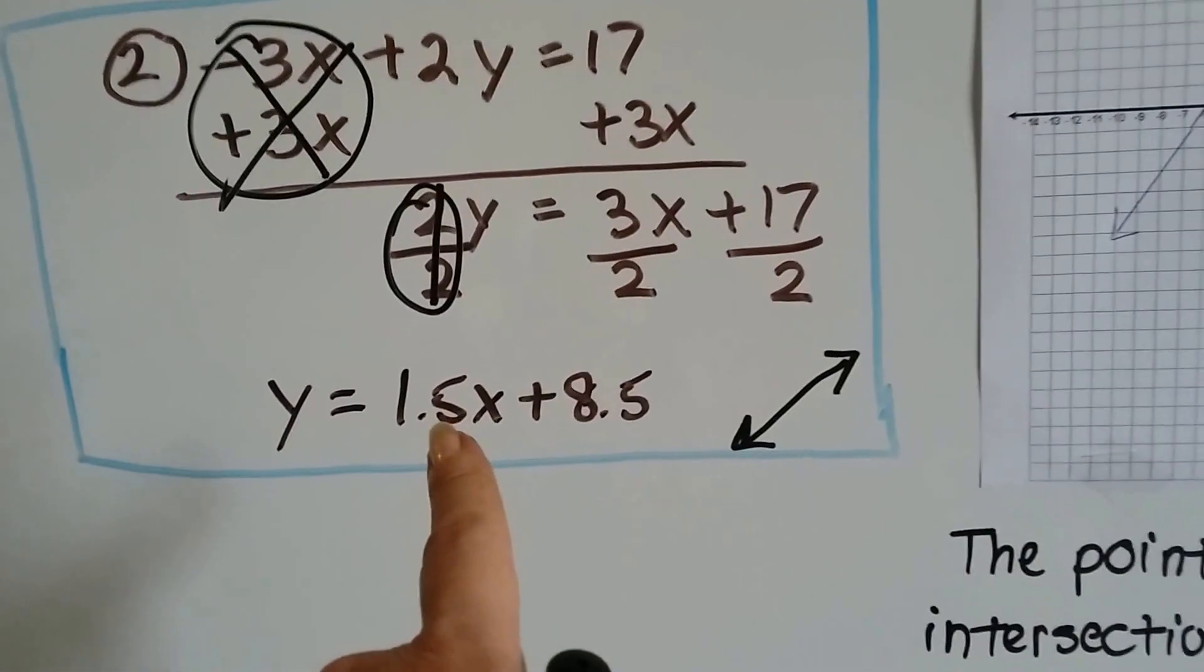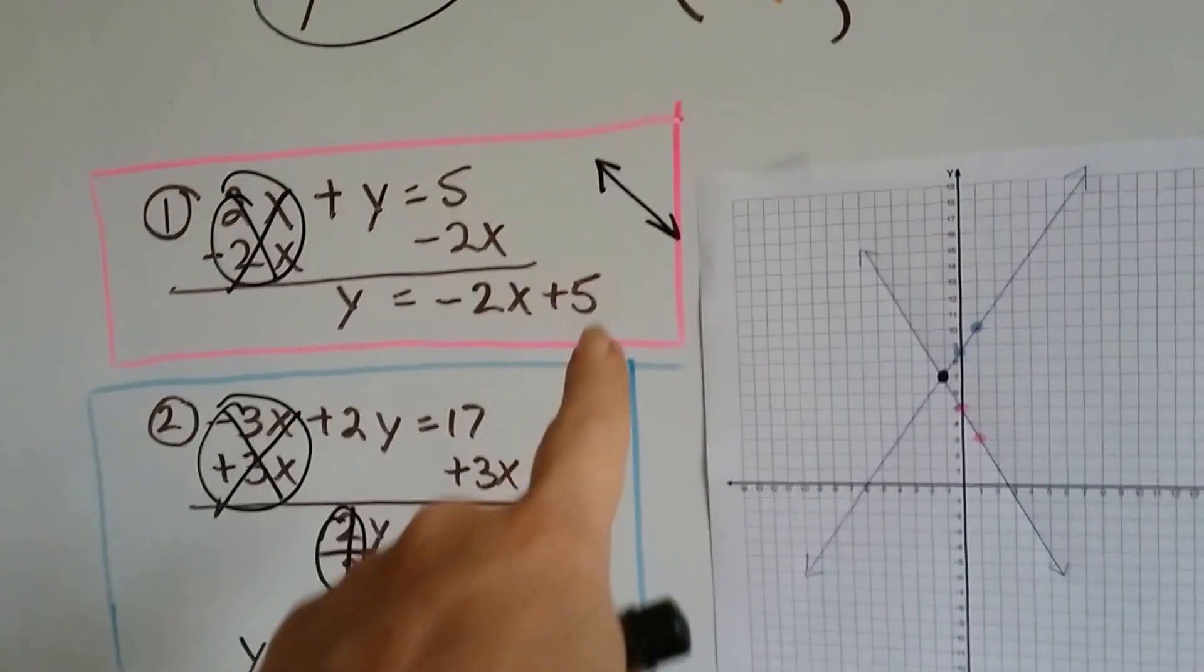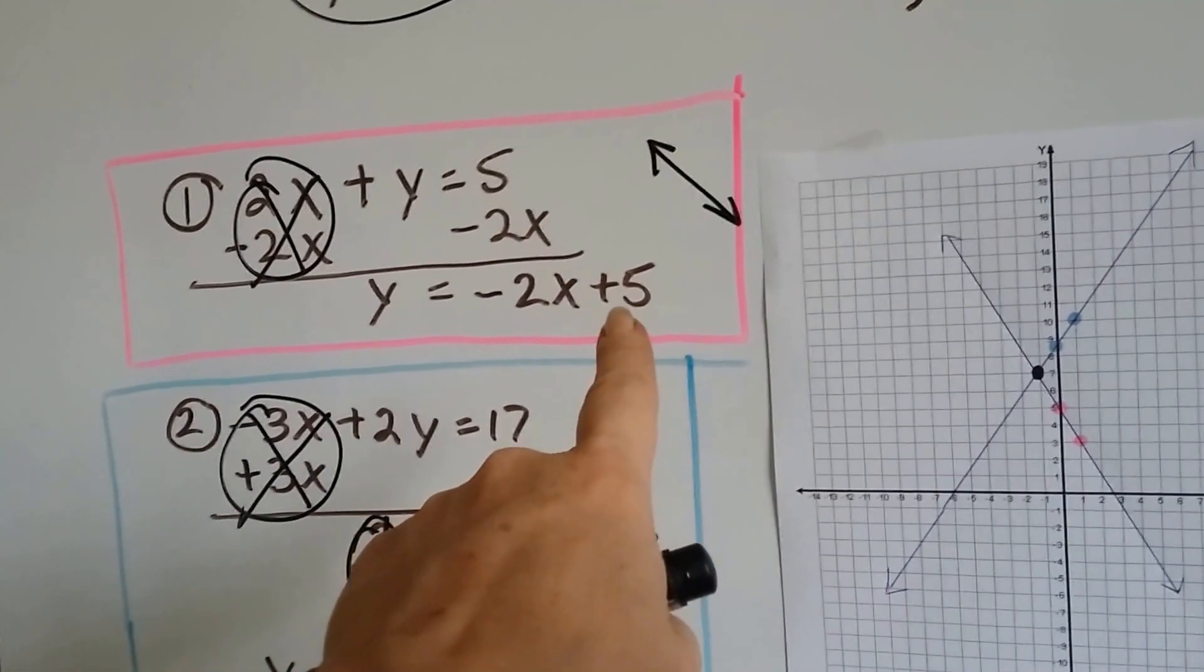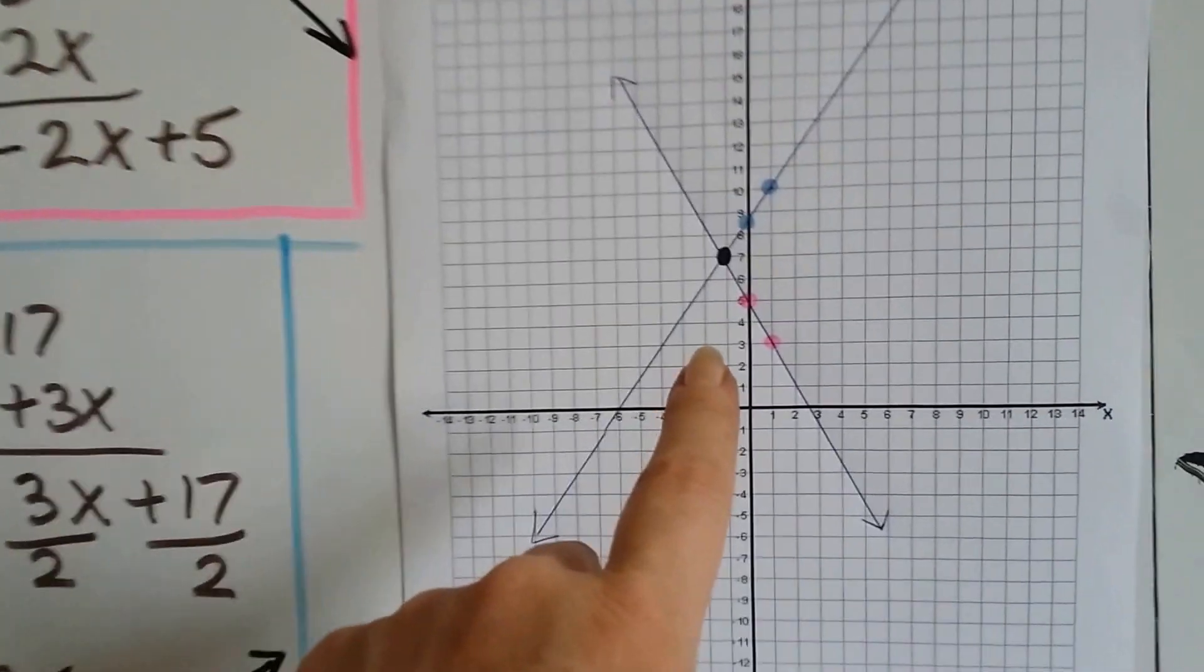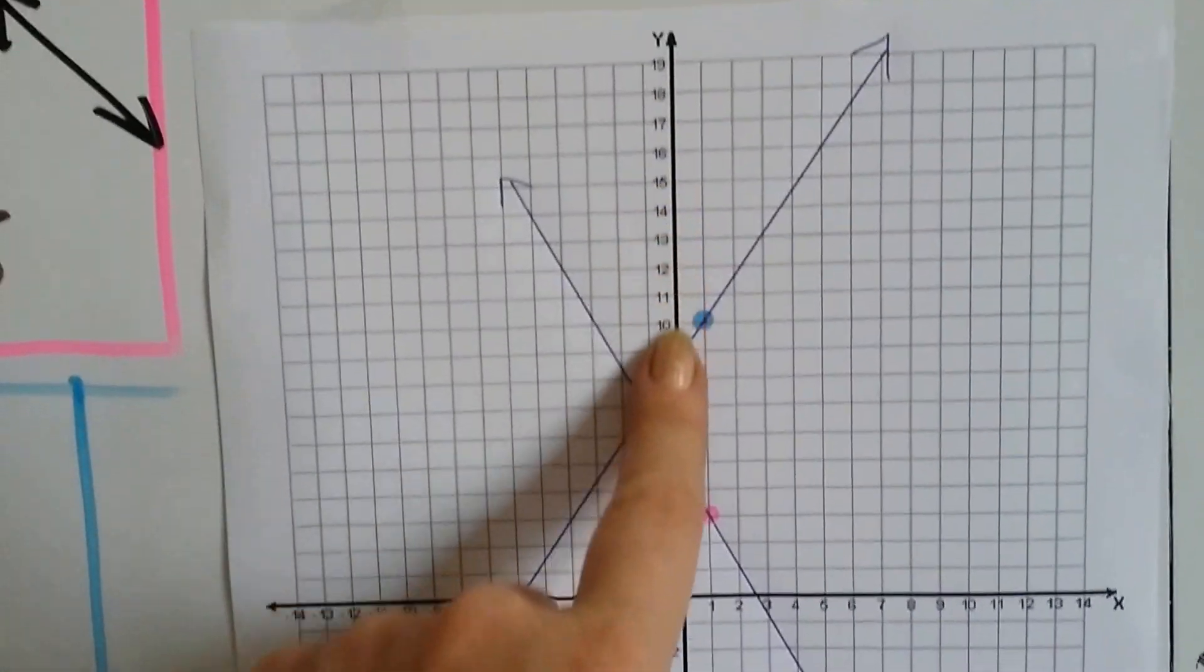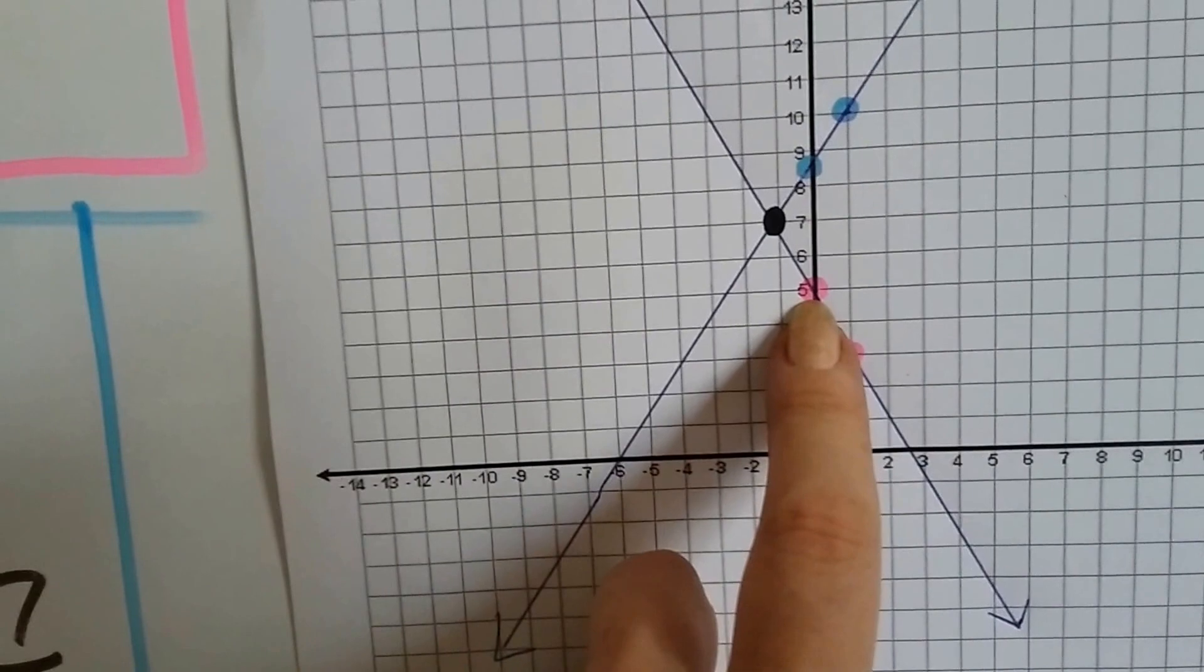So now I've got to plot these points. So the first one we've got is, for the pink line, is we know it hits the y-axis at plus 5. So let's look very closely here. Here's our y, and the pink one hits it at plus 5 right there. See that?